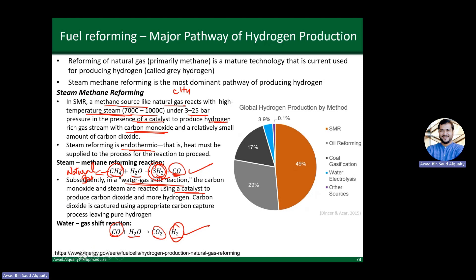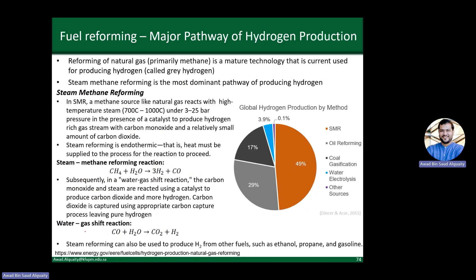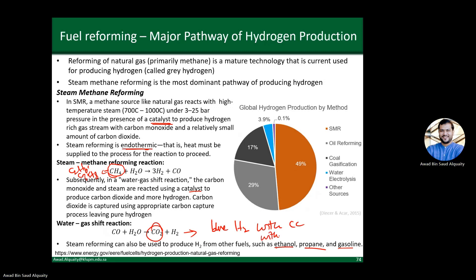Steam methane reforming is the most dominant, most mature hydrogen production method. Although methane is used here, the same process can be applied to other fuels — ethanol, propane, gasoline, and others. Natural gas, while mainly methane, also contains ethane (C2H6), propane (C3H8), and others. The SMR process is endothermic — it requires heat — and requires a catalyst. It produces CO2, but this CO2 can be captured. When CO2 is captured from SMR, the hydrogen produced is called blue hydrogen; without carbon capture, it's called gray hydrogen.